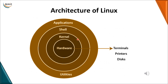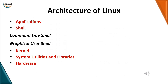Now we will see the basic architecture of Linux. The architecture follows a layered structure. In this layered structure we have applications, shell, kernel, hardware, and utilities. If the user wants to interact with the operating system, they must use an application program. Commands given by the user through application programs are taken by the shell, which acts as a converter, translating those commands into the understandable language of the kernel.